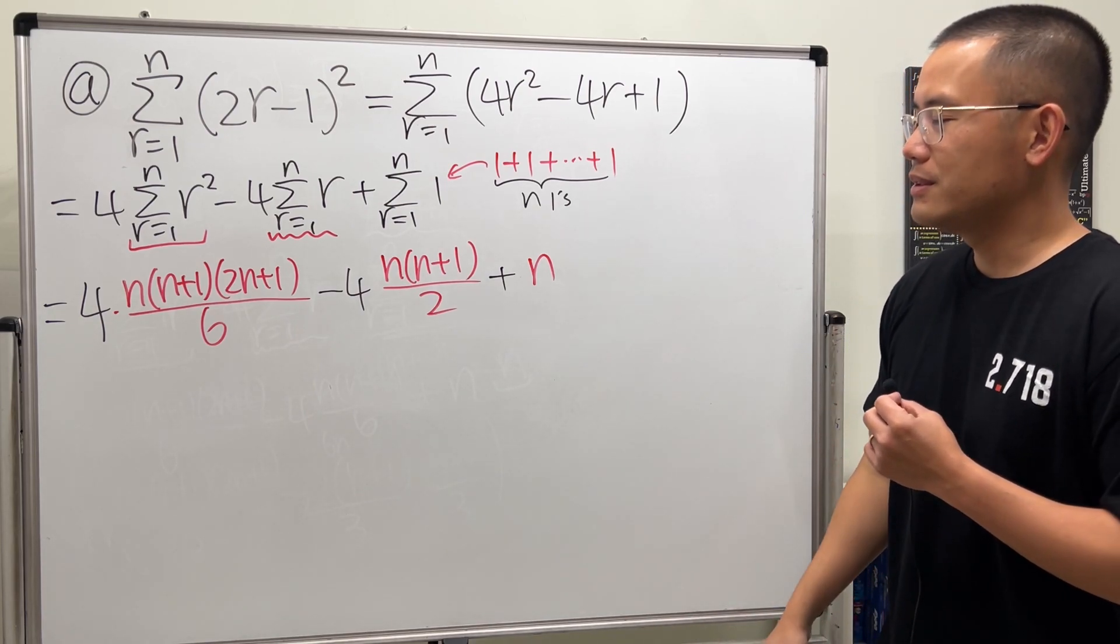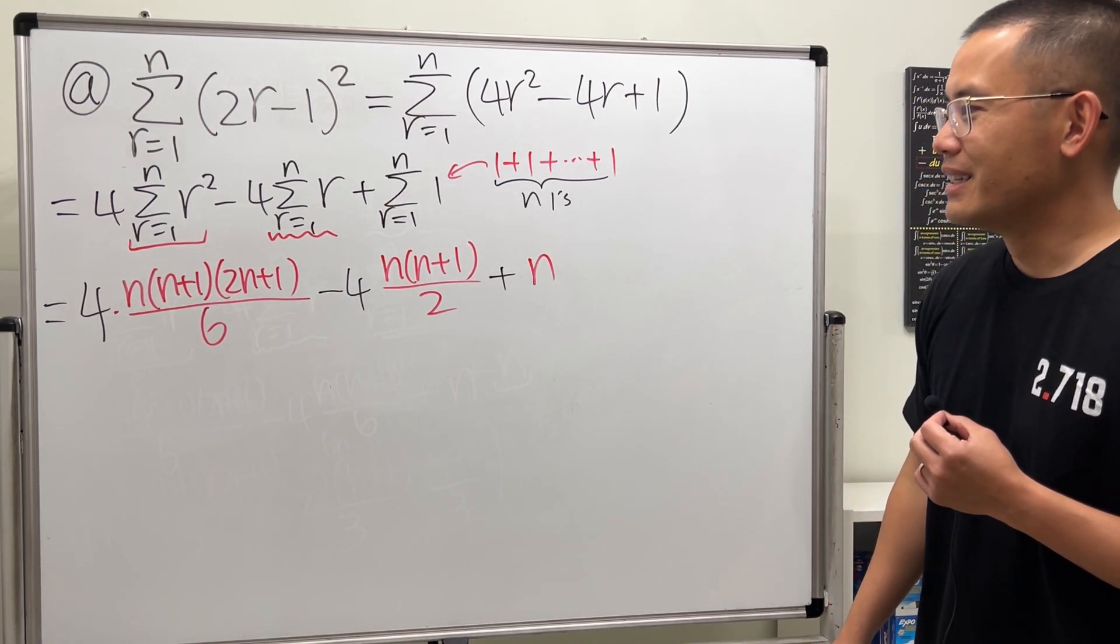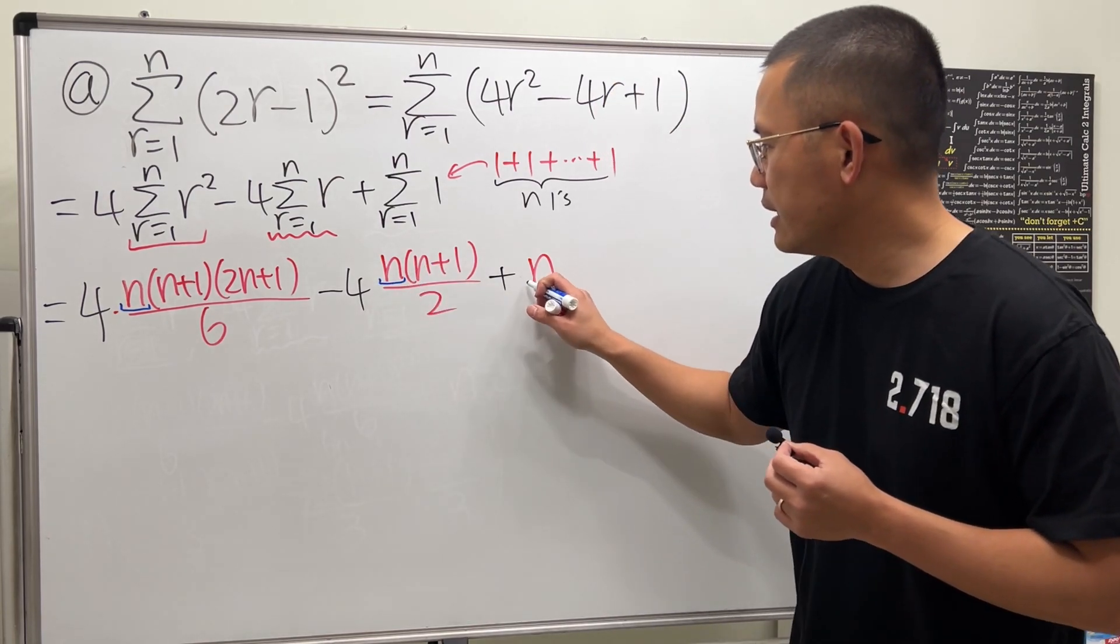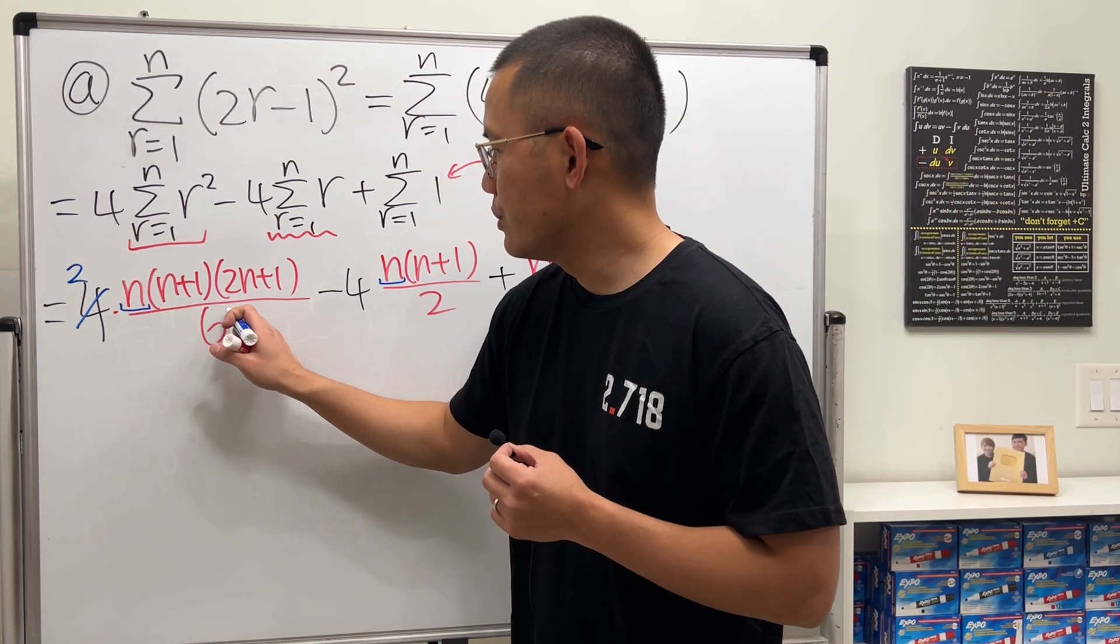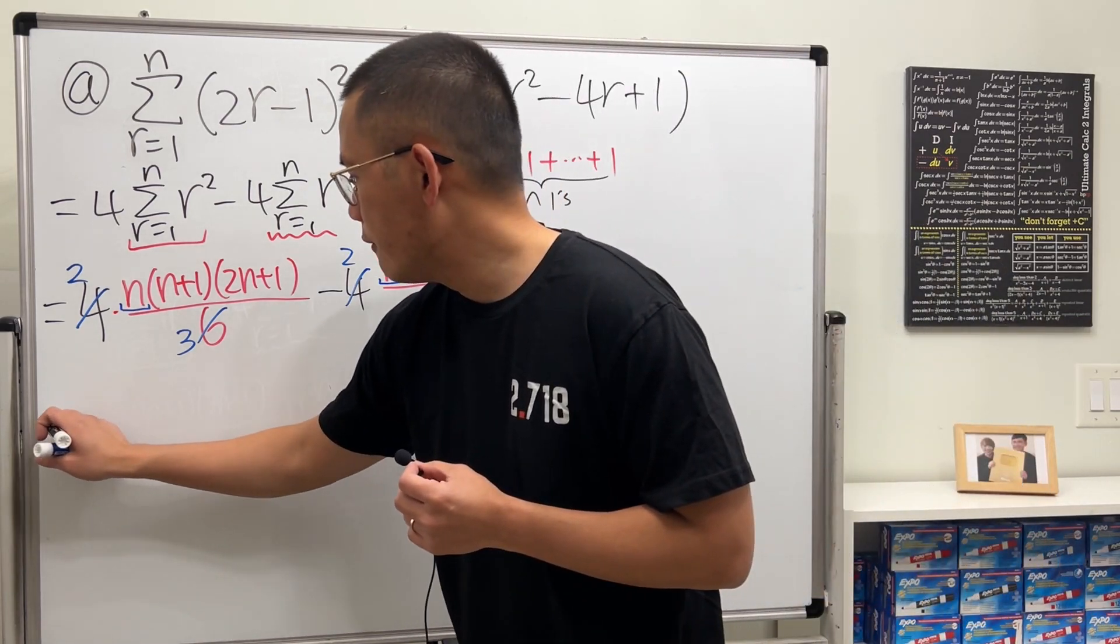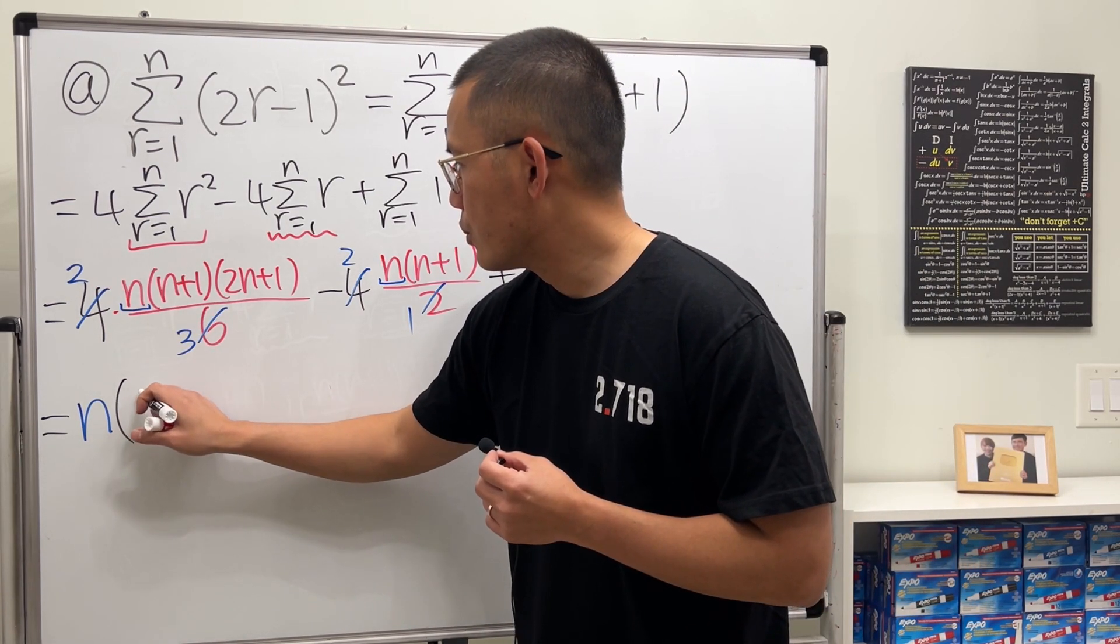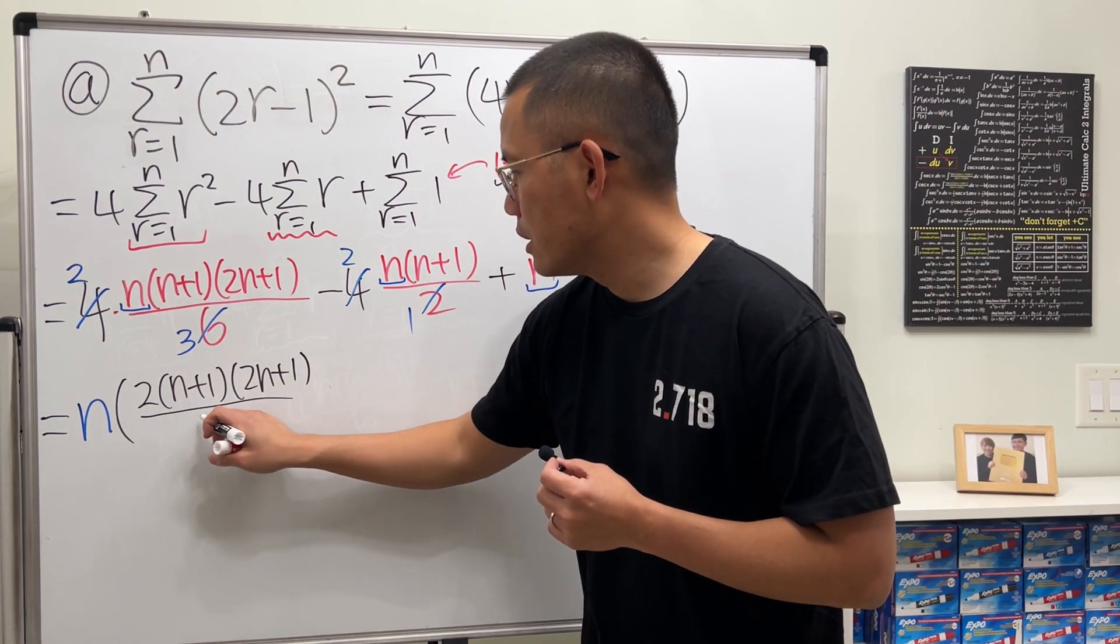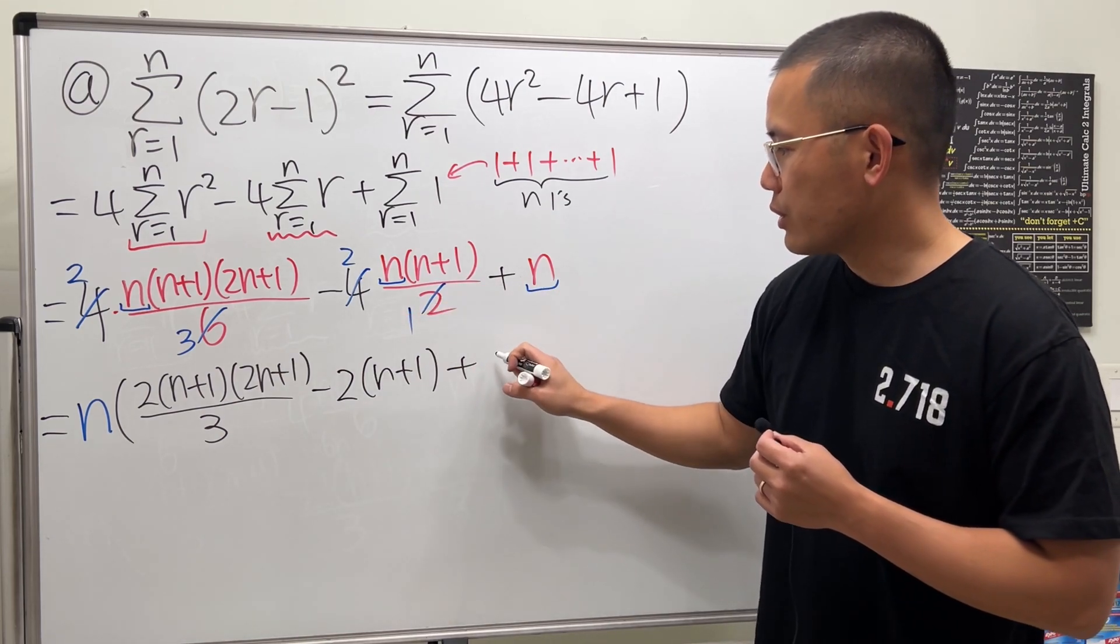Now for the rest of the things that we will have to do, just simplify it. Because the question wants us to write the answer in a certain form. So let's make the answer into that form. So firstly, I see that this has an n and at the end we also have the n. So we can factor out the n. And of course, we can reduce. So 2, 3, and then this is 2, and then 1. Factoring out the n all the way to the front. And then here I'm just going to leave it as 2n plus 1, 2n plus 1, and then over 3. And then this right here is minus 2, and then n plus 1. And then finally, the n is on the outside already, so plus 1.